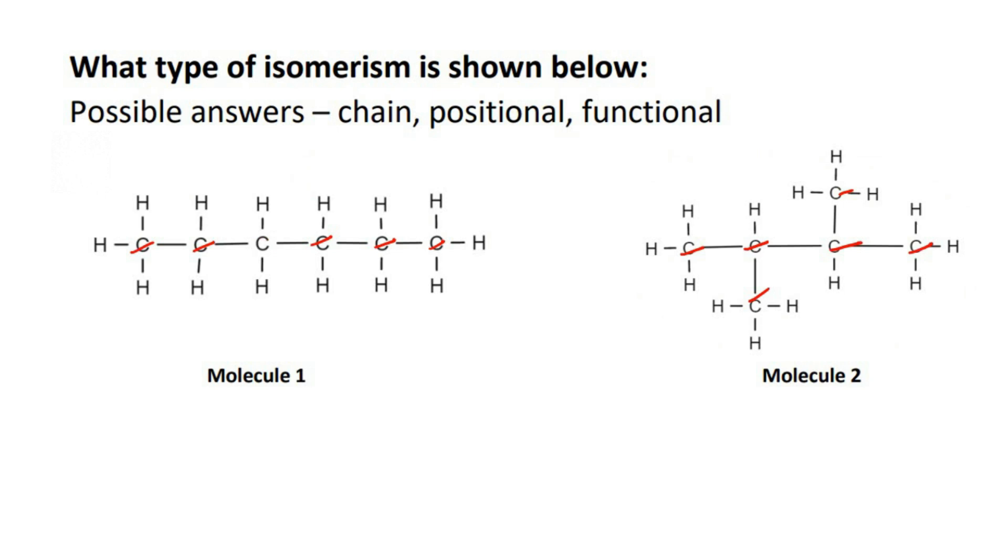So that is what isomers are. Isomers are molecules that have the same amount of each element. Okay, but they're different. They're either different based upon the different chain, different position, or different functional groups.